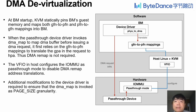The next technique is DMA devisualization, which eliminates the use of IOMMU page tables. When the pass-through device driver invokes the DMA map function before issuing a DMA request, it first relies on GFN-to-PFN mappings to translate the GPA in the DMA request to HPA. Thus, DMA remap is not required, and we can configure the IOMMU DMA remap hardware as pass-through mode. Additional modification to the device driver is also required to ensure that the DMA map is re-invoked at page size granularity.